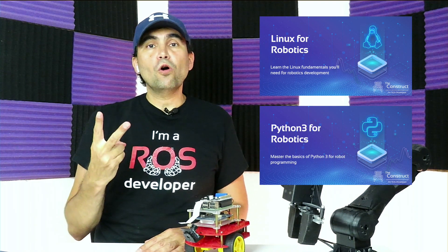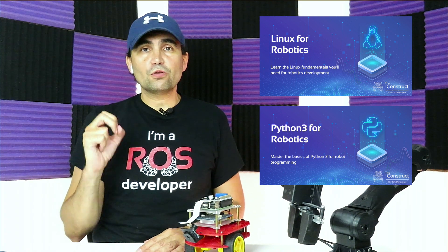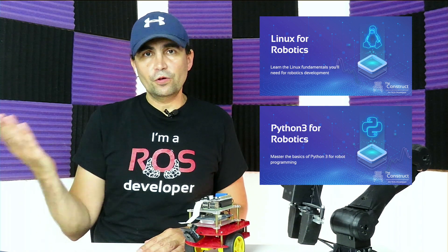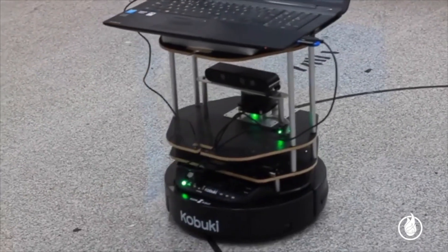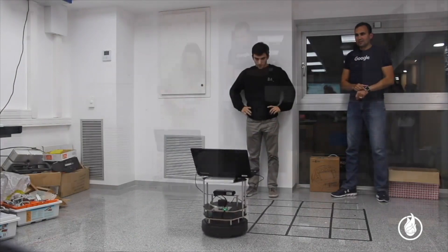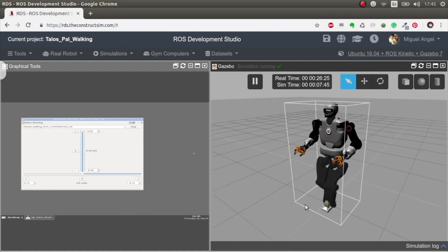It's very likely your students come from a background without any Linux or Python knowledge. If that's the case, I'm putting in the show notes links to two free online courses — one for learning Linux for robotics and another for Python for robotics. Third, make your students practice as much as possible. Use the robots you have in your lab for practicing with ROS as soon as possible. If you don't have robots or can't afford them, use simulations — they are very good for learning ROS and allow students to practice with many different types of robots.